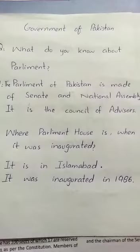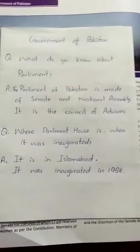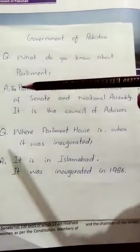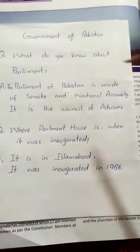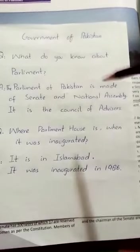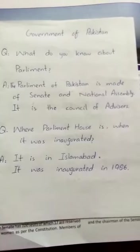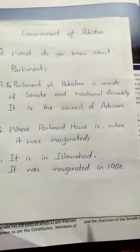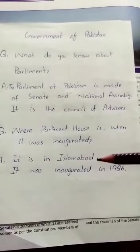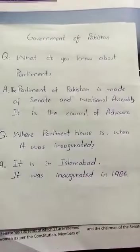Now class, let's move to the question answers that you have to write in your notebook. The first question is: what do you know about parliament? Answer: the parliament of Pakistan is made up of the senate and national assembly. It is the council of advisors. The next question is: where is the parliament house and when was it inaugurated? Answer: it is in Islamabad. It was inaugurated in 1986.